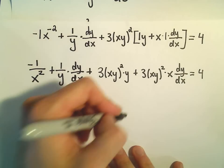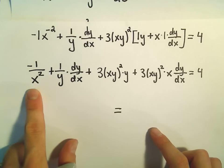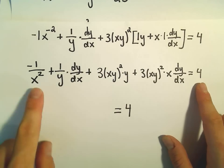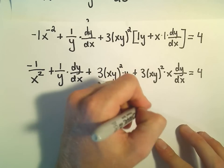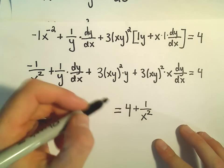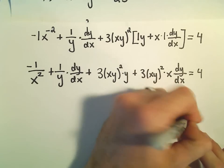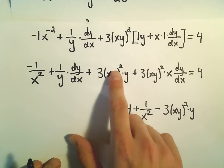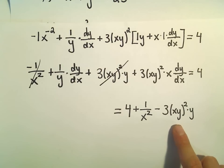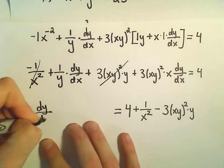Alright, a couple things now. I'll do a couple steps at once. Anything that doesn't have a dy dx, such as the first term and the third term, I'm going to move to the right side. So there's our positive 4 from before. Negative 1 over x squared I'm going to add to both sides, so I'll get positive 1 over x squared. Likewise, notice we could write this other term, so I would have to subtract this term. So I can subtract the 3 x y squared times y, so that's what I'm doing there. We've moved that term over by subtracting.